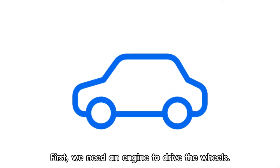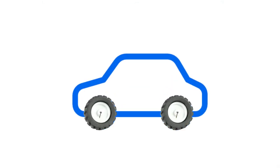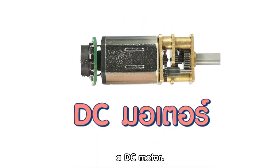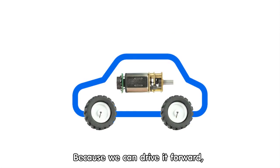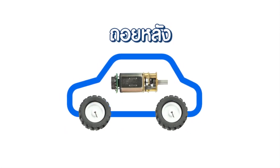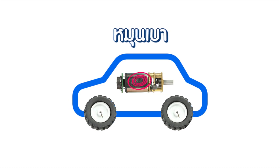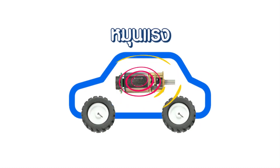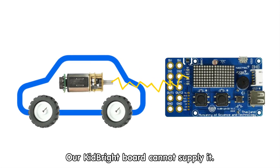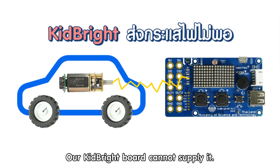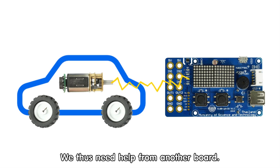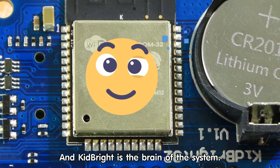First, we need an engine to drive the wheels — that is a motor. It must be a DC motor, because we can drive it forward, backward, slow, or fast. The DC motor consumes a lot of power, and our KidBright board cannot supply it. We thus need help from another board, and KidBright is the brain of the system.